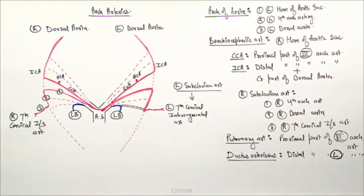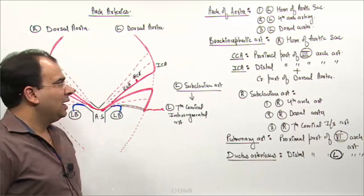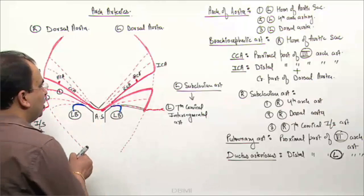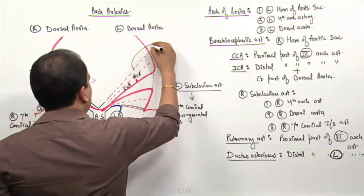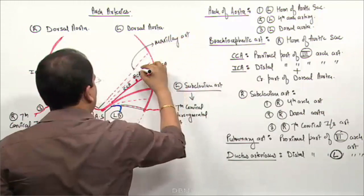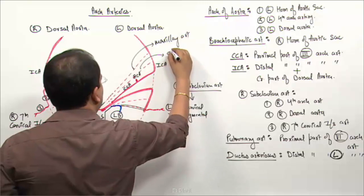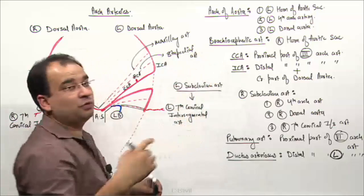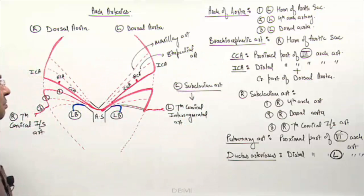The remaining dotted arteries may have remnants: the remnant of the first arch artery is the maxillary artery, and the remnant of the second arch artery is the stapedial artery. If asked what the artery of the first arch is — it is the maxillary artery. The stapedial artery, the remnant of the second arch artery, is the artery of the second arch. Thank you.